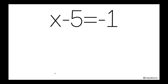In this example, we have x minus 5 is equals to negative 1. The first thing that I need to do is to isolate my variable. What do I mean by that? Well, basically, you need to leave the variable alone.